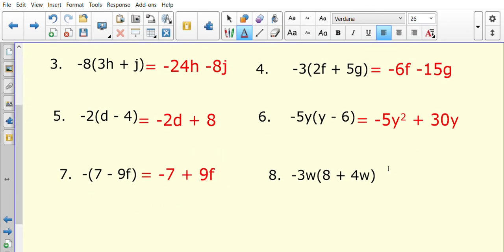And the last question of the assignment, question number eight. Negative 3w times the bracket. So negative 3w times positive 8 is negative 24w. And then negative 3w times positive 4w is negative 12w squared.